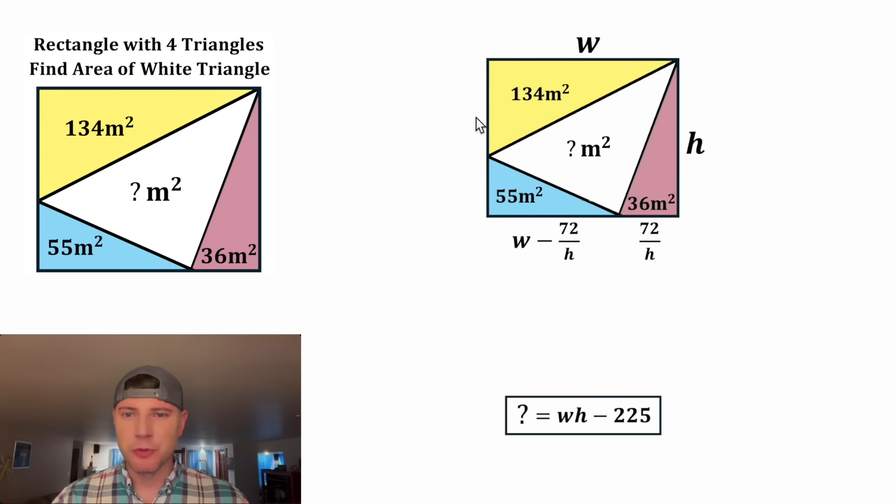And then we can do the same thing for this side of the rectangle. Let's call this portion Y, and we can write a formula for the yellow triangle. It'll be the base of W times the height of Y divided by two equals the area of 134. For this one, we want to solve for Y. So we're going to multiply both sides by two over W. On the left-hand side, we'll be left with Y.